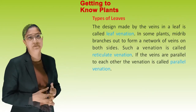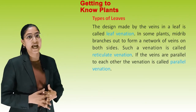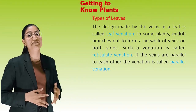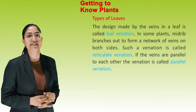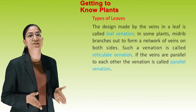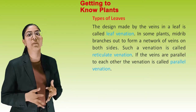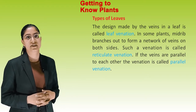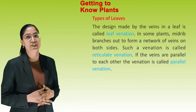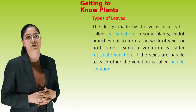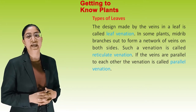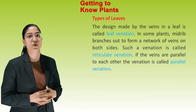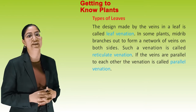Types of Leaves: The design made by veins in a leaf is called leaf venation. In some plants, the midrib branches out to form a network of veins on both sides — such venation is called reticulate venation. If the veins are parallel to each other, the venation is called parallel venation.